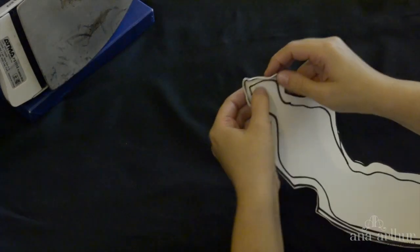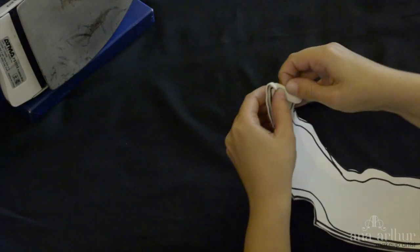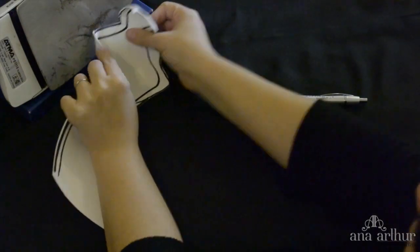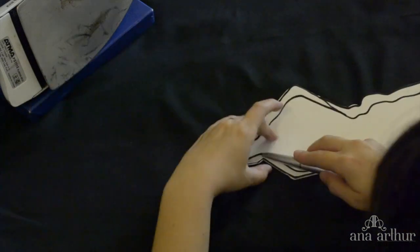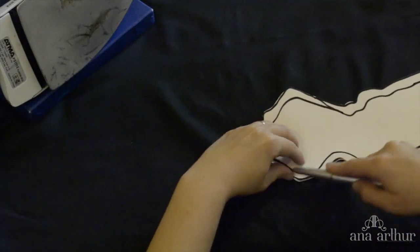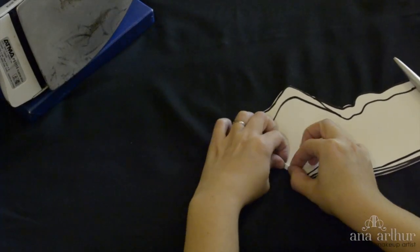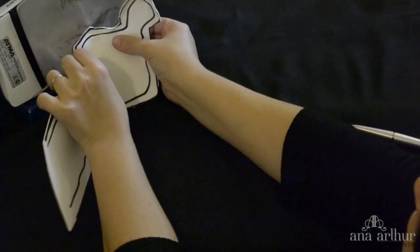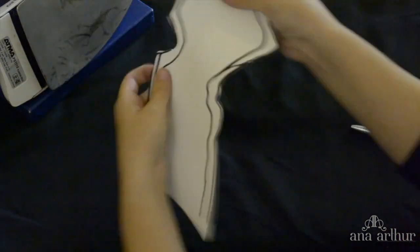So separate a little bit the parts that you don't want to heat again and then start shaping. It will shape better if the EVA foam is really hot, so just again be careful not to burn yourself.